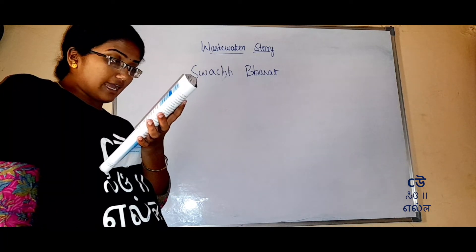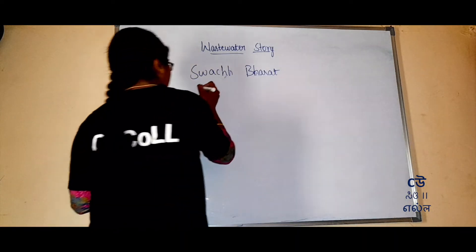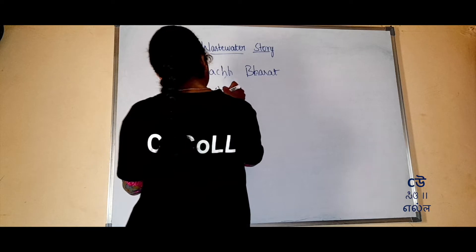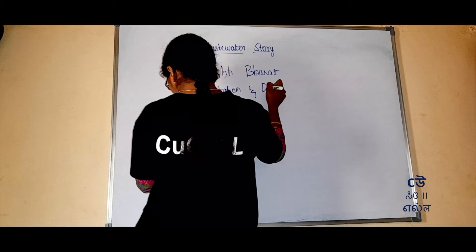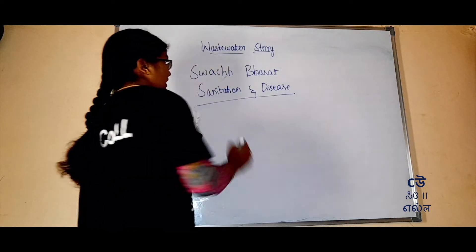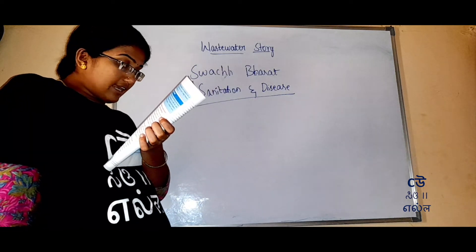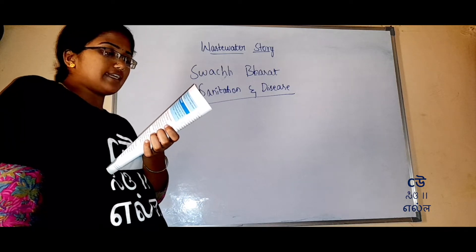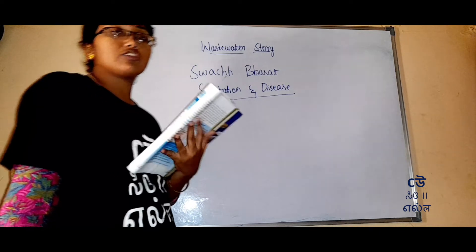Next is sanitation and diseases. Poor sanitation and contaminated drinking water is the cause of a large number of diseases. Here, sanitation and contaminated drinking water are going to cause many diseases.